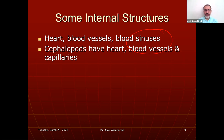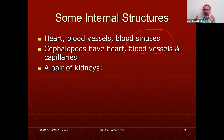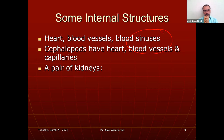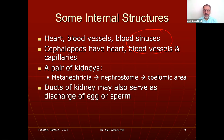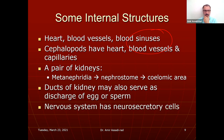Cephalopods have blood vessels and capillaries and do not have an open circulatory system — they have a closed circulatory system. The whole phylum is distinguished by having an open circulatory system, but within this phylum, cephalopods — octopus, squids, nautilus — have closed circulatory system. They have a pair of kidneys, metanephridia, nephrostome, and a coelomic area. The kidney ducts may also discharge eggs and sperm.